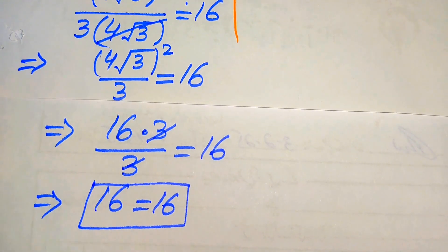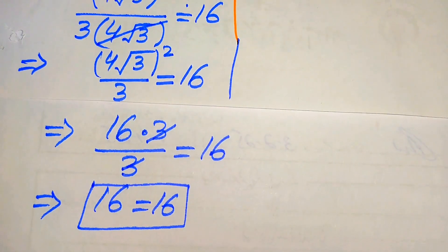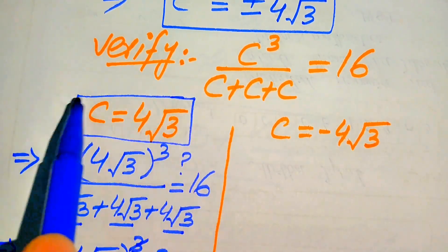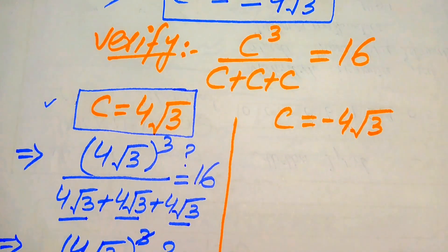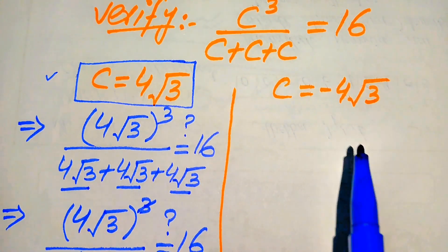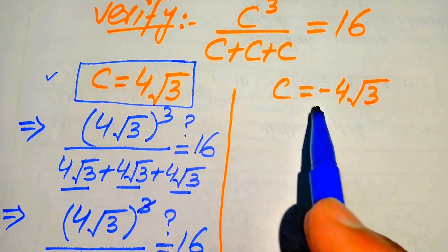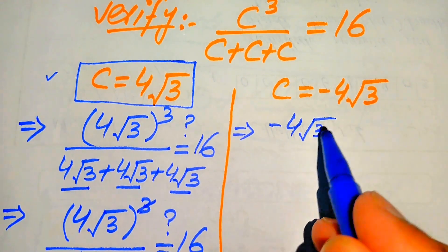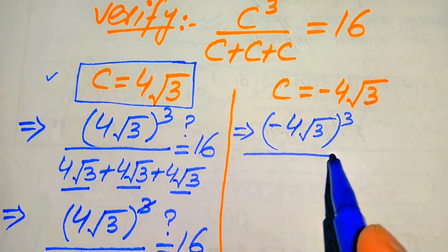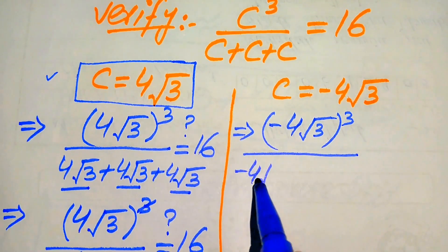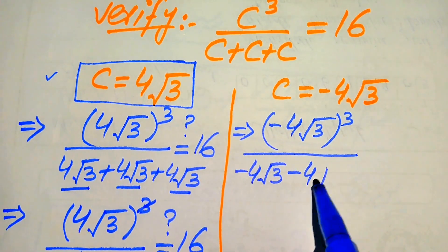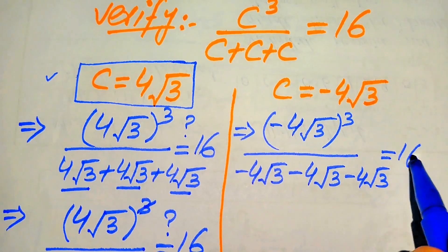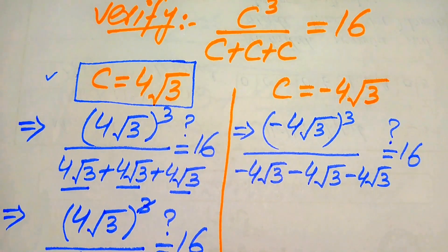This confirms that c equals 4 times square root of 3 satisfies the given equation, so it is one solution. In the same pattern, we verify the second root. Substituting the negative value: (minus 4 times square root of 3) cubed, divided by (minus 4√3) plus (minus 4√3) plus (minus 4√3), equals 16 — this is our claim.